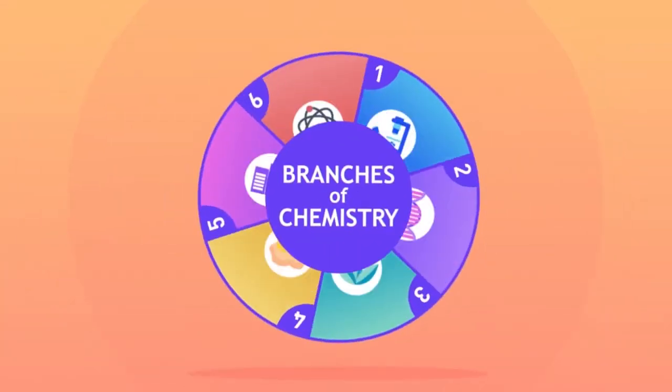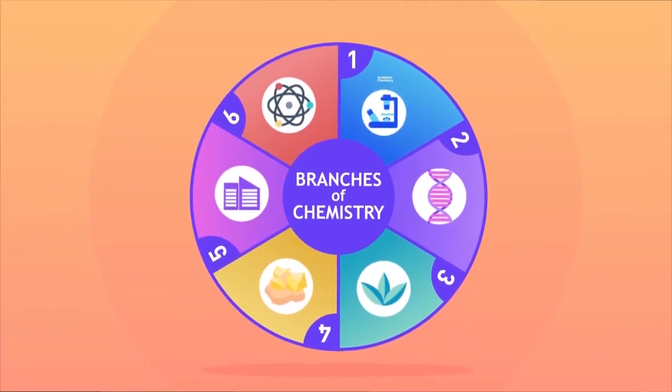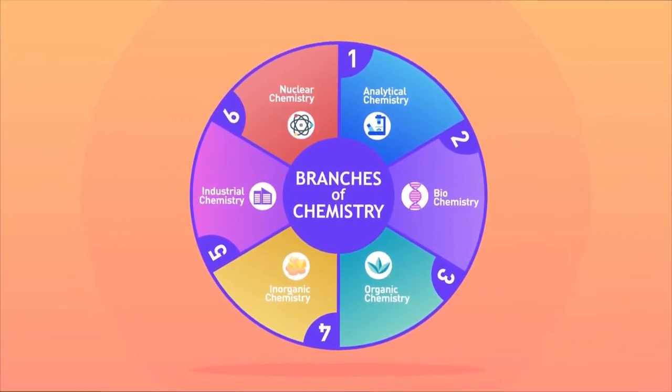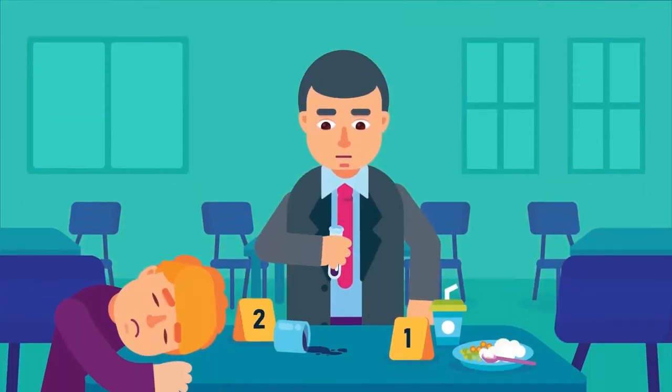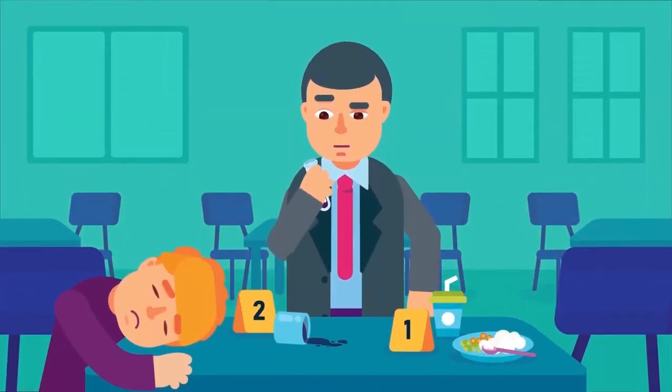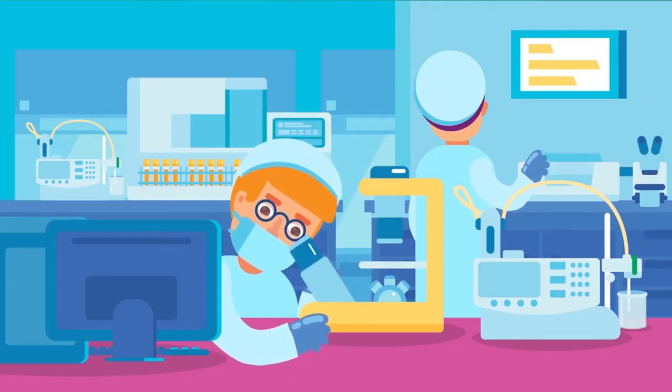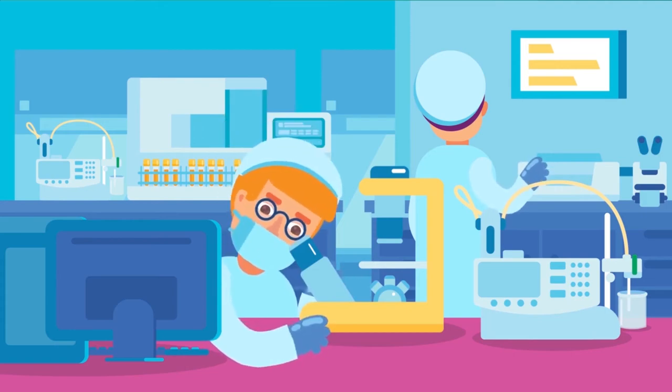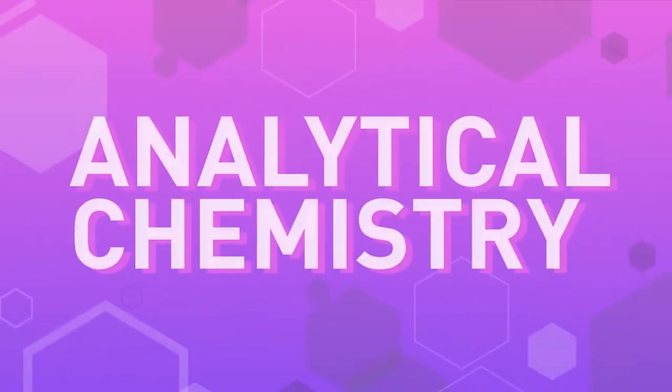Branches of chemistry. Although there are many types of chemistry, we will be discussing six today. The first branch is like detective work. You have an example given and then you have to work out what it is made up of and the amount of different components.